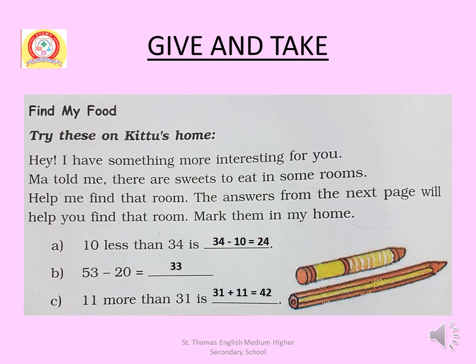Try these on Kitu's home. I have something more interesting for you. Ma told me there are sweets to eat in some rooms — help me find that room! The answers from the next page will help you find that room. Mark them in my home. First: 10 less than 34. Second: 53 minus 20. Third: 11 more than 31. I will show how these answers are found in the next slide.